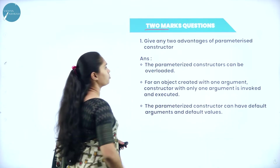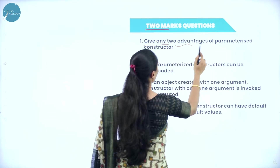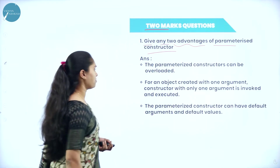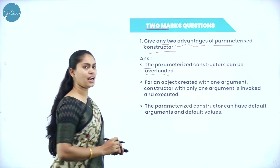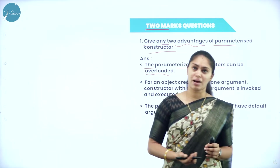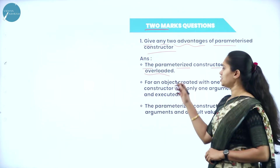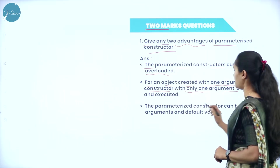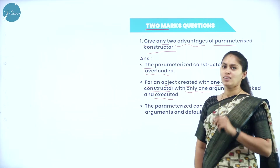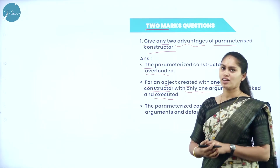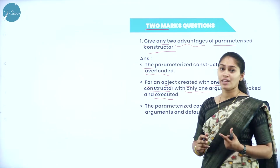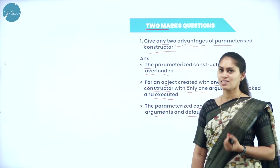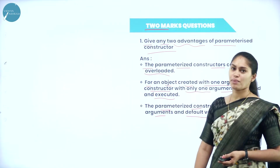Next we will deal with the two marks questions. The first question: give any two advantages of parameterized constructor. The parameterized constructor can be overloaded, so you can have two or more constructors with the same name but with different parameters or different data types. For an object created with one argument, the constructor with only one argument is invoked and executed. It will be based on the number of arguments and type of argument. Also, the parameterized constructor can have default arguments and default values.